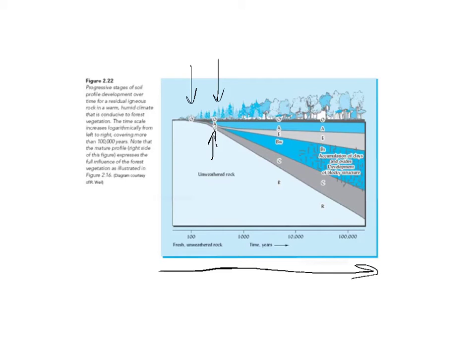This is residual type parent material. So we're taking the material that's underneath, the unweathered rock underneath, and it's getting weathered over time. It's becoming soil. It's being transformed over this time scale.